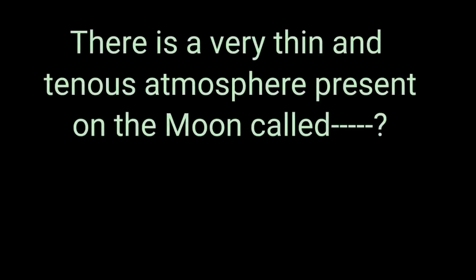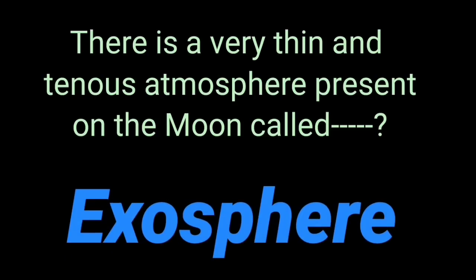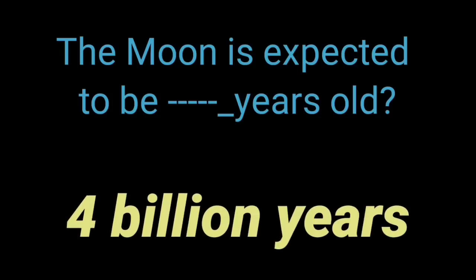There is a very thin and tenuous atmosphere present on the moon called the exosphere. The direction of the orbit of the moon is in the same direction as the earth. The moon is expected to be how many years old? Four billion years.